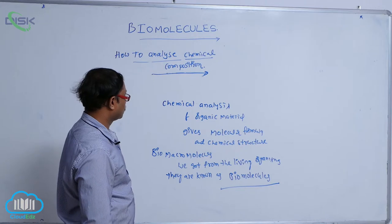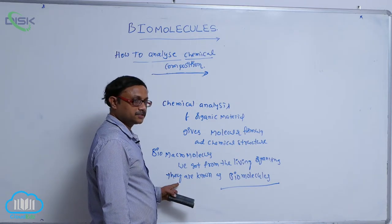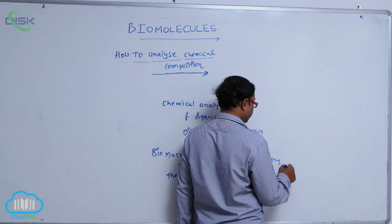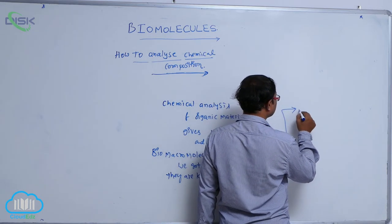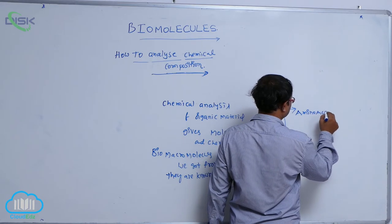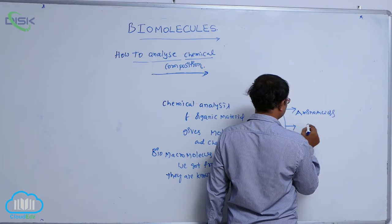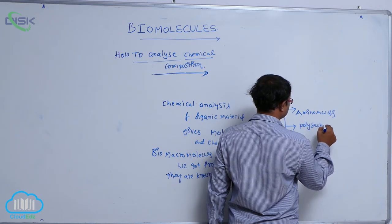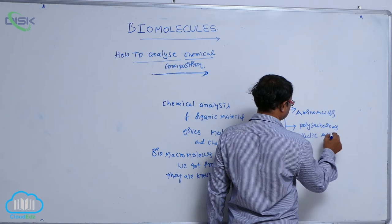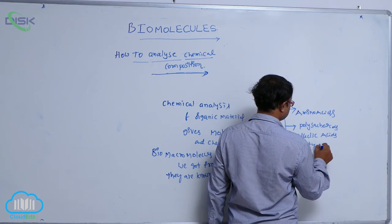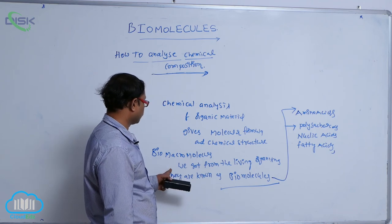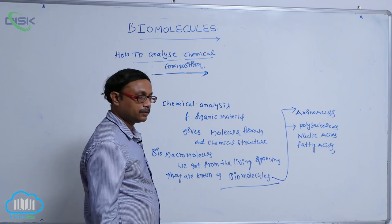These biomolecules are, as explained before, proteins. Proteins are made up of amino acids. Polysaccharides, these biomolecules are mainly amino acids, polysaccharides, nucleic acids, and fatty acids. These biomolecules we get from living organisms are known as biomolecules.